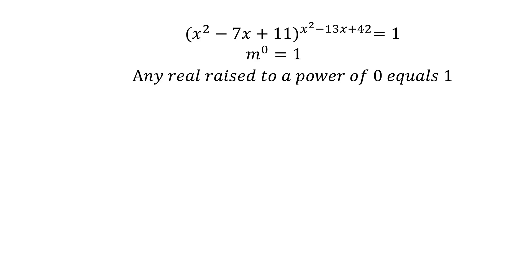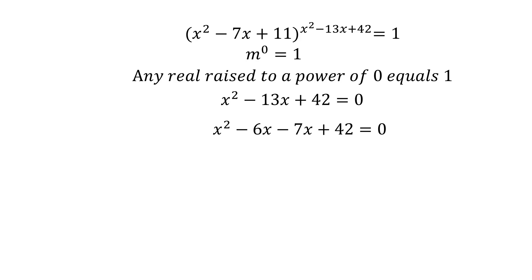If we set x squared minus 13x plus 42 equals 0, the equation will be satisfied because the left hand side will be 1 and the right hand side will be 1. We need two numbers whose product is 42 and whose sum is minus 13, and that's minus 6 and minus 7. Factoring gives x minus 6 and x minus 7, so x equals 6 and x equals 7.